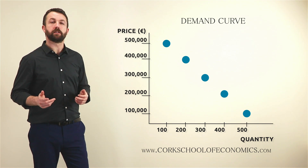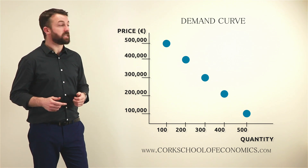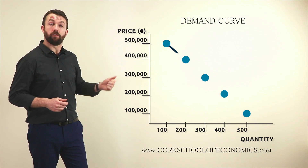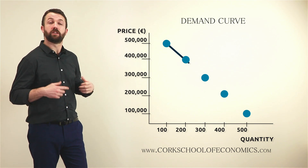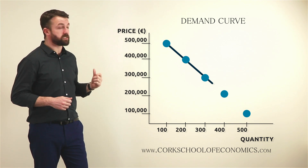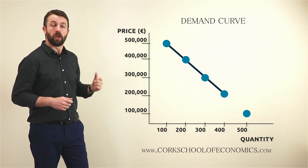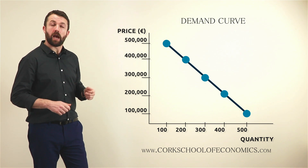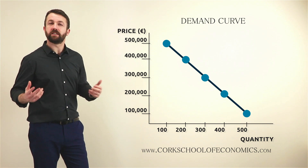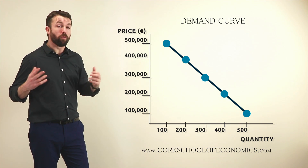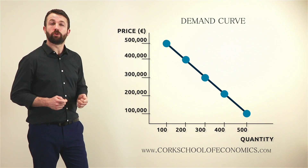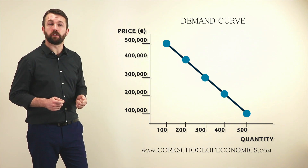Each of these points represents the quantity demanded of houses in the Douglas area at each price. Put all of those points together and you'll have a representation of overall demand in the area for those houses. That's how you create a demand curve.